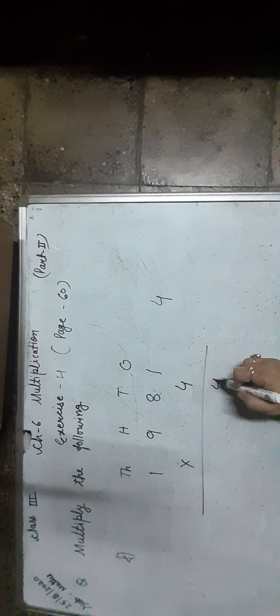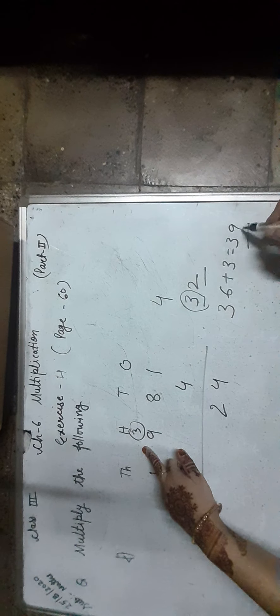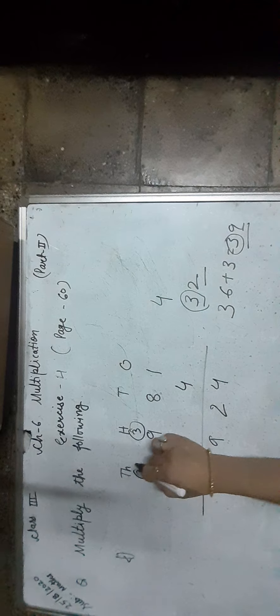Find the product of 1,981 and 4. Start from the 1s place digit: 1 × 4 is equal to 4, so we write 4 in the 1s place. Now, 8 × 4 is equal to 32 — we write 2 in the 10s place and carry 3 to the 100s place. Now, 9 × 4 is equal to 36, plus 3, equals 39. We write 9 in the 100s place and carry 3 to the 1,000s place.